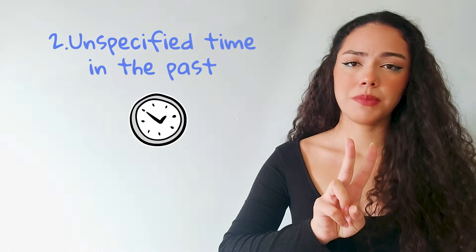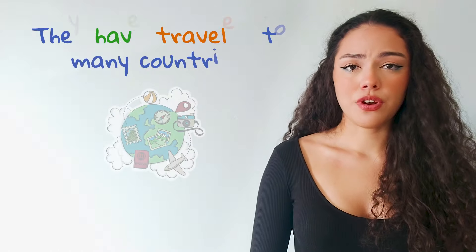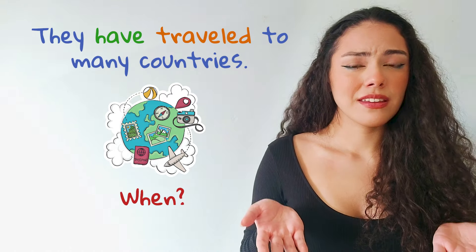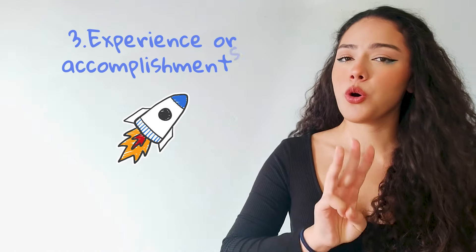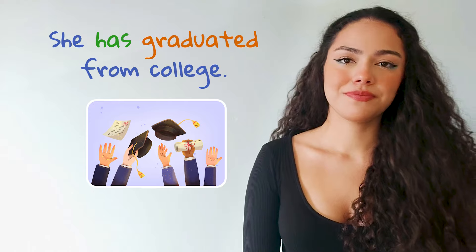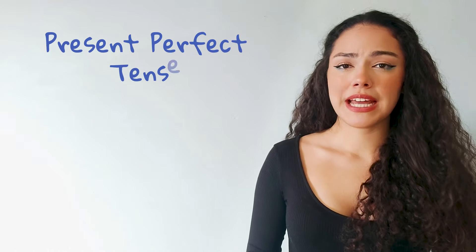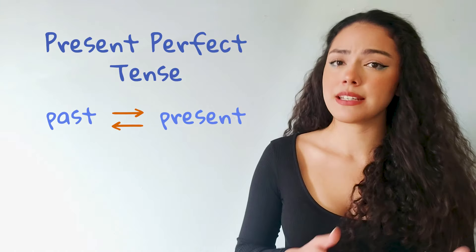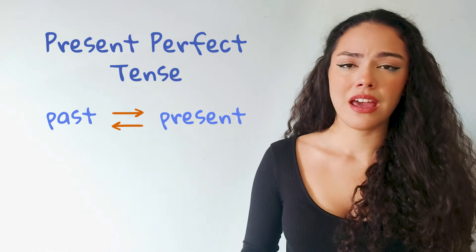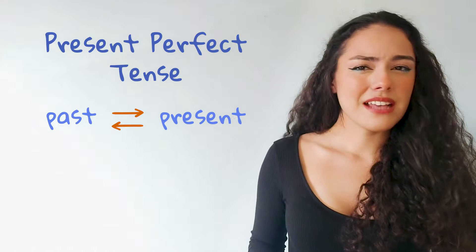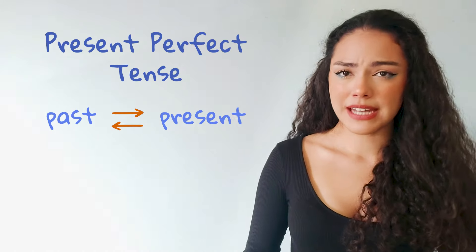Unspecified time in the past: they have traveled to many countries — we do not know when. Experience or accomplishments: she has graduated from college. It's important to note that this tense focuses on the connection between the past and the present. The exact time of the action isn't as important as its relevance now.